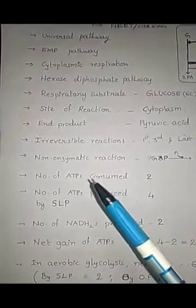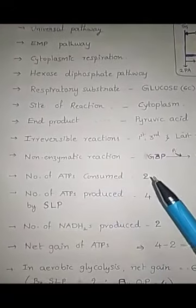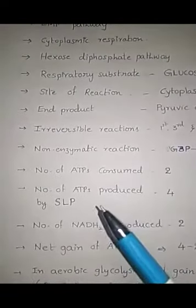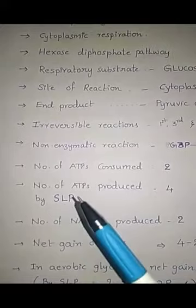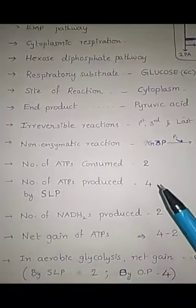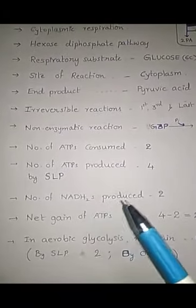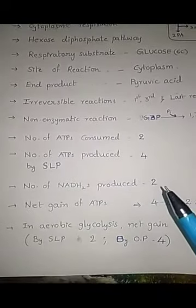In glycolysis, number of ATPs consumed: 2. Number of ATPs produced by substrate level phosphorylation: 4. Number of NADH2 produced: 2.